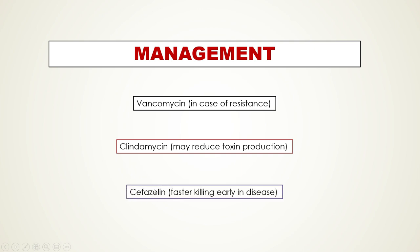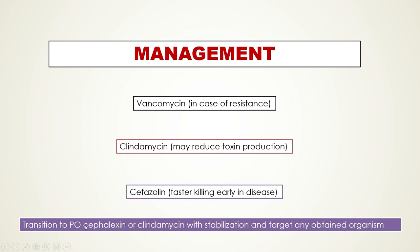In addition, patients may be given a first-generation cephalosporin. The reason is that it tends to kill bacteria faster — it is bactericidal rather than bacteriostatic. Because the patient is critically ill, we may give all three: vancomycin for resistant forms, clindamycin for stopping toxin production, and a first-generation cephalosporin for killing the bacteria faster. Eventually we transition to oral therapy, typically cephalexin or oral clindamycin depending on what organism has grown in culture.